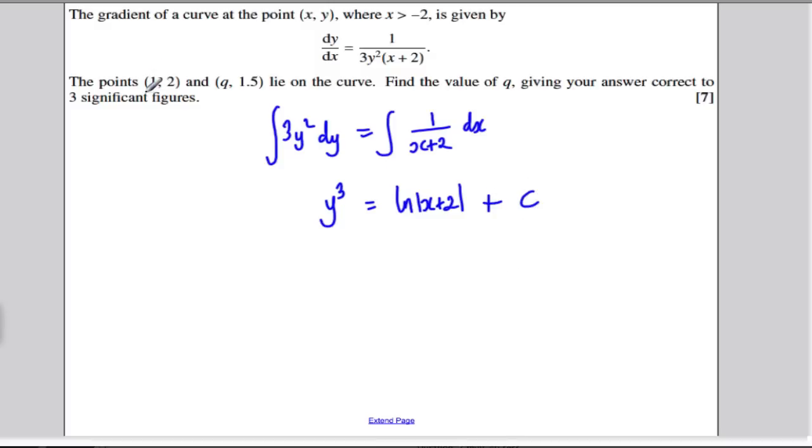Now, we know that the point 1, 2 lies on the line, so we can substitute in x is 1, y is 2. We would get 2 cubed, which is 8, is equal to ln, 1 plus 2 is 3, plus c. So, that tells us that c must be equal to 8 subtract ln 3.